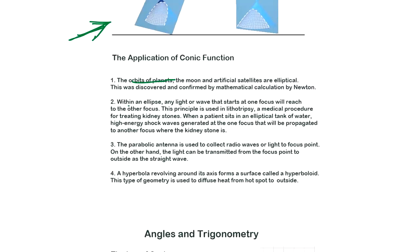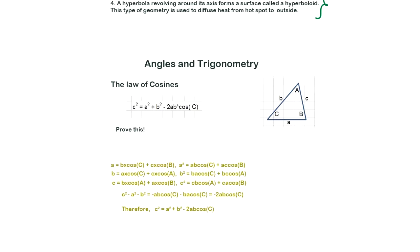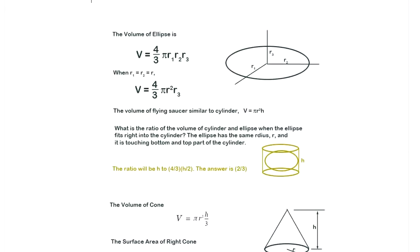Conic section is when you have a cone. Probably you look at that algebra 2, analytical geometry, application of conic function. The orbit and planet within the ellipse, any light or wave that start at one focus will reach to the other focus. This is interesting. Parabolic antenna is used to collect a radio wave. Why? Hyperbola involves around its axis forms a surface called hyperboloid. So this is in the plenty of algebra 2. The law of cosine, this one proves here. You stop the video, try to prove it.